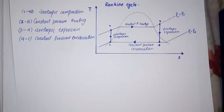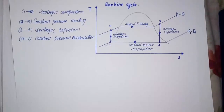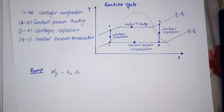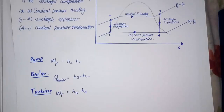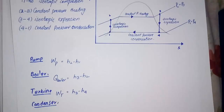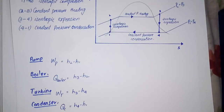Now it's time to write down the formulas for each component and process. First, the pump: work input equals enthalpy at point 2 minus enthalpy at point 1. Heat supplied by the boiler equals enthalpy at point 3 minus enthalpy at point 2. Work output of the turbine equals enthalpy at point 3 minus enthalpy at point 4. Heat rejected at the condenser equals enthalpy at point 4 minus enthalpy at point 1.